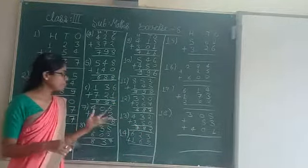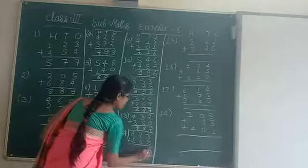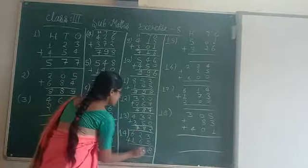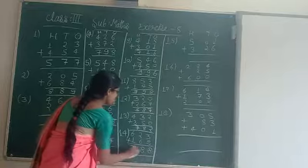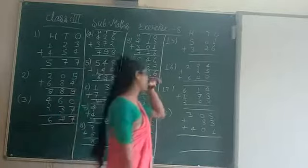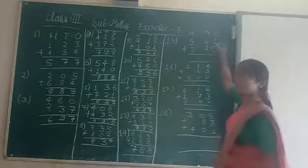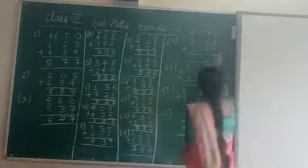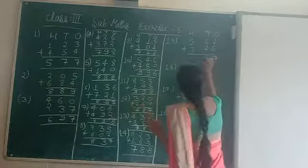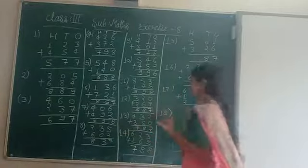5 plus 3 — 6, 7, 8. 6 plus 2 — 7 and 8. 6 plus 1 is 7. Answer: 7, 1, 8, 8. For question number 15: 6 plus 1 is 7. 6 plus 2 — 7 and 8. 5 plus 3 — 6, 7, 8.